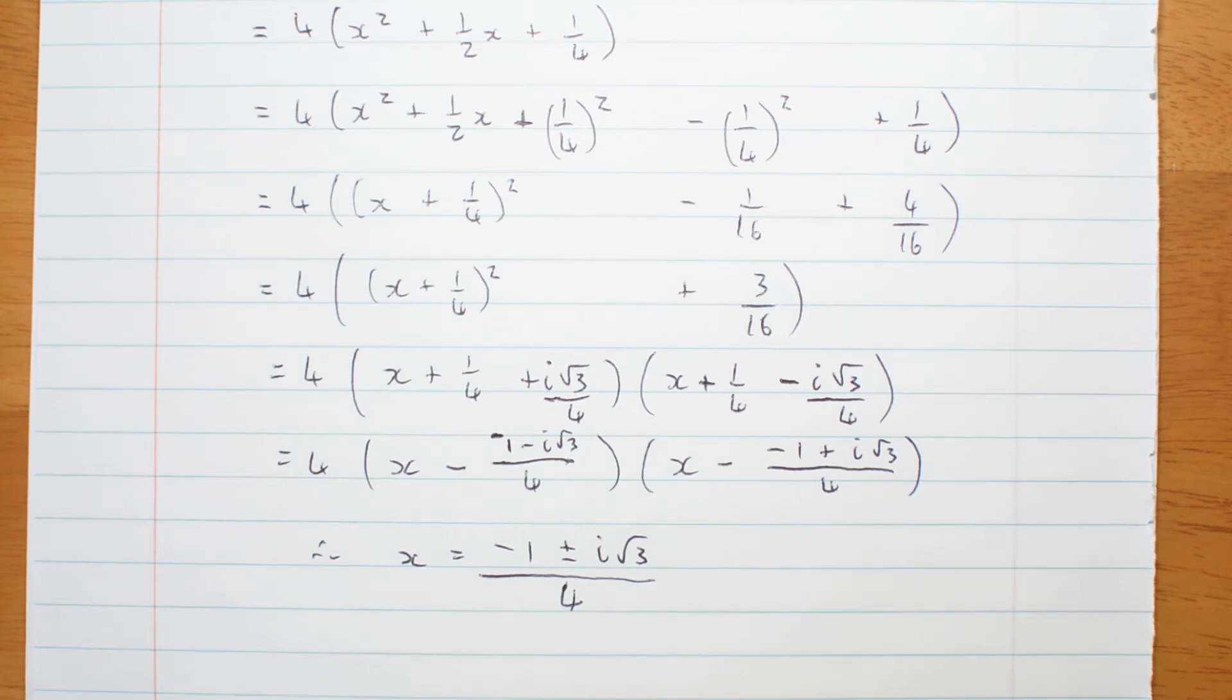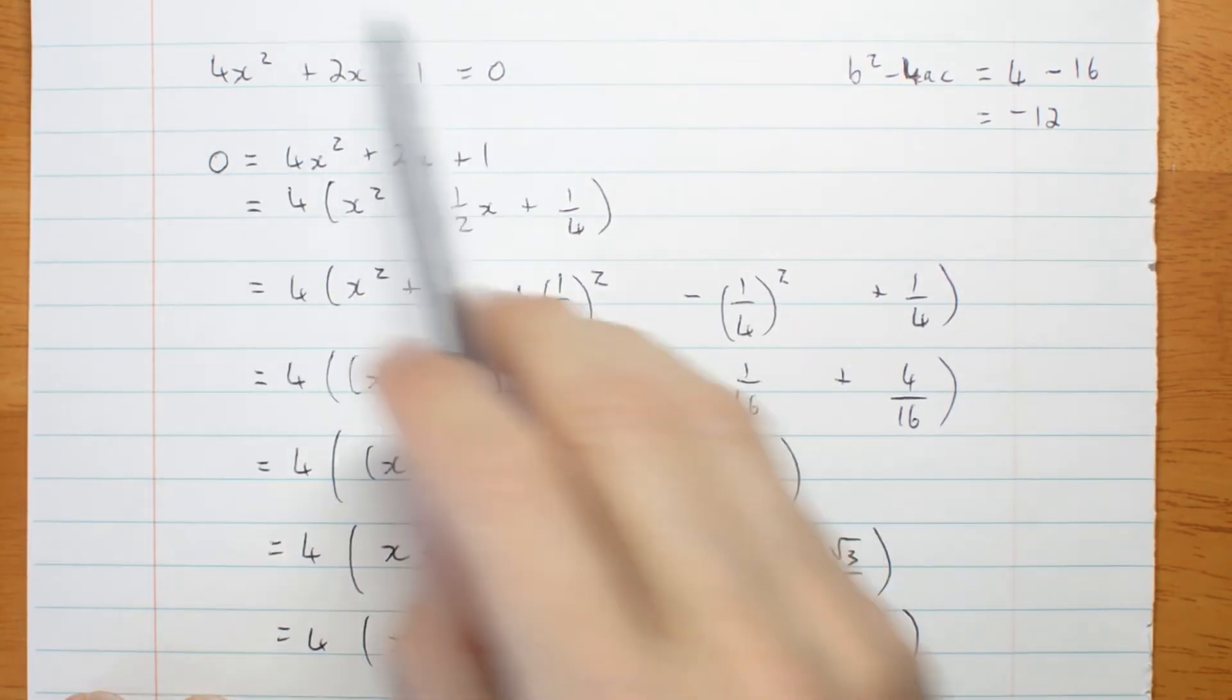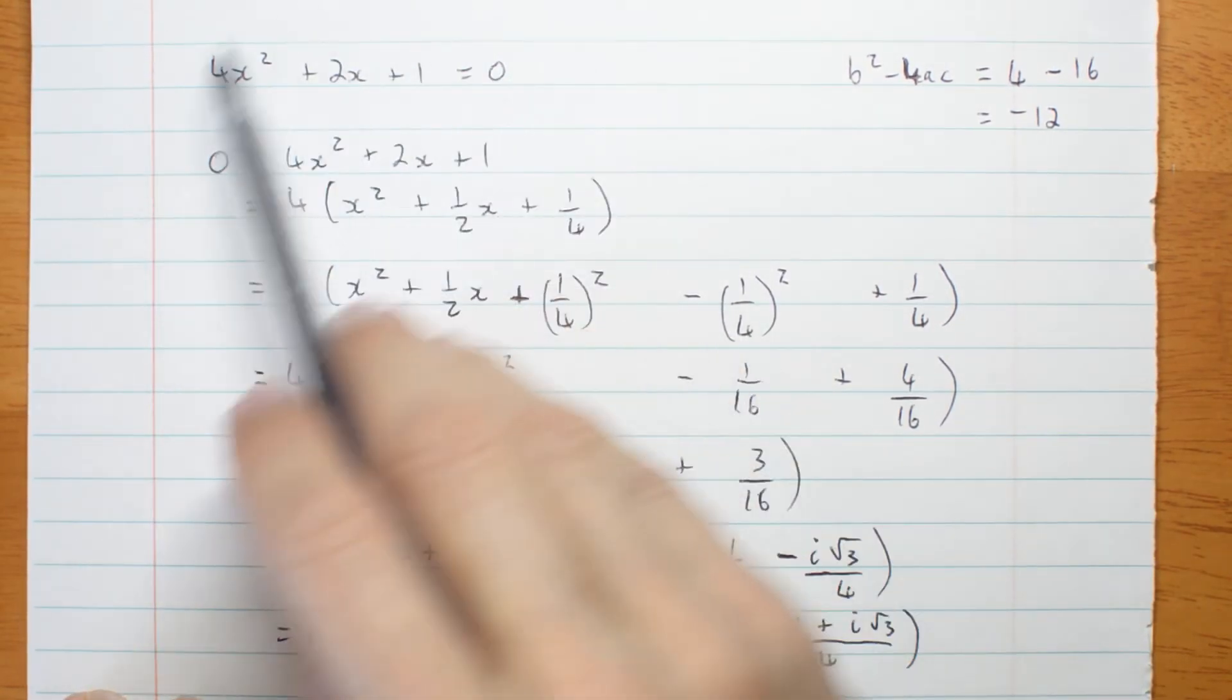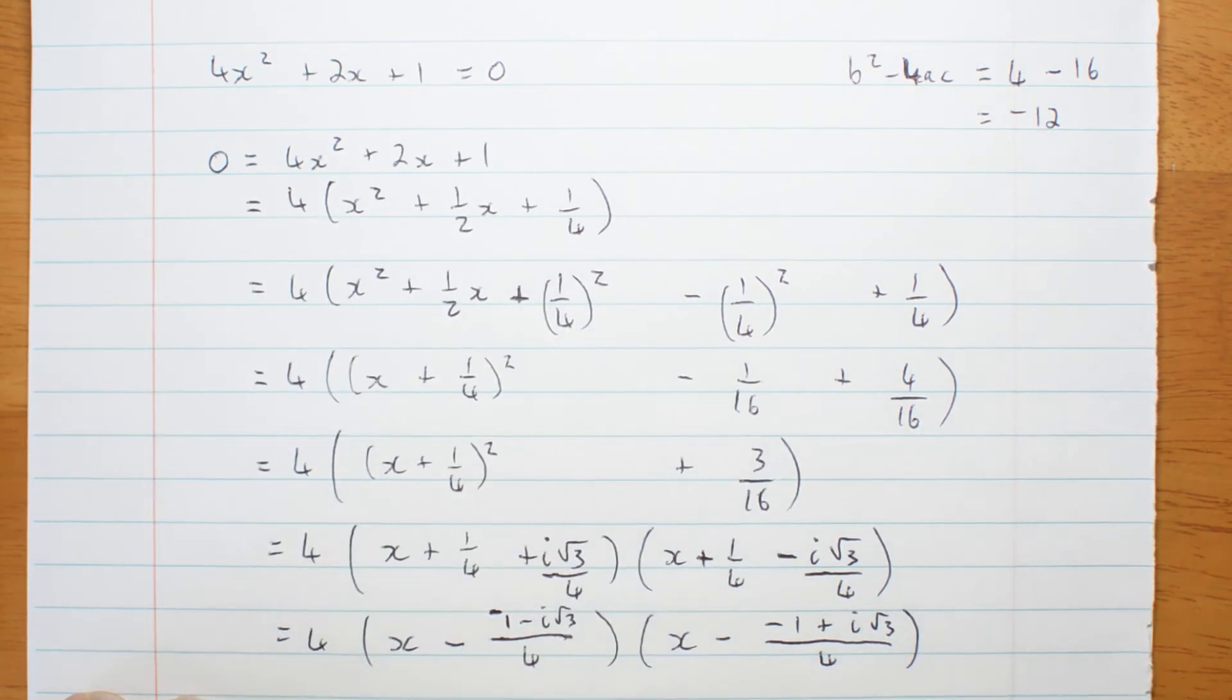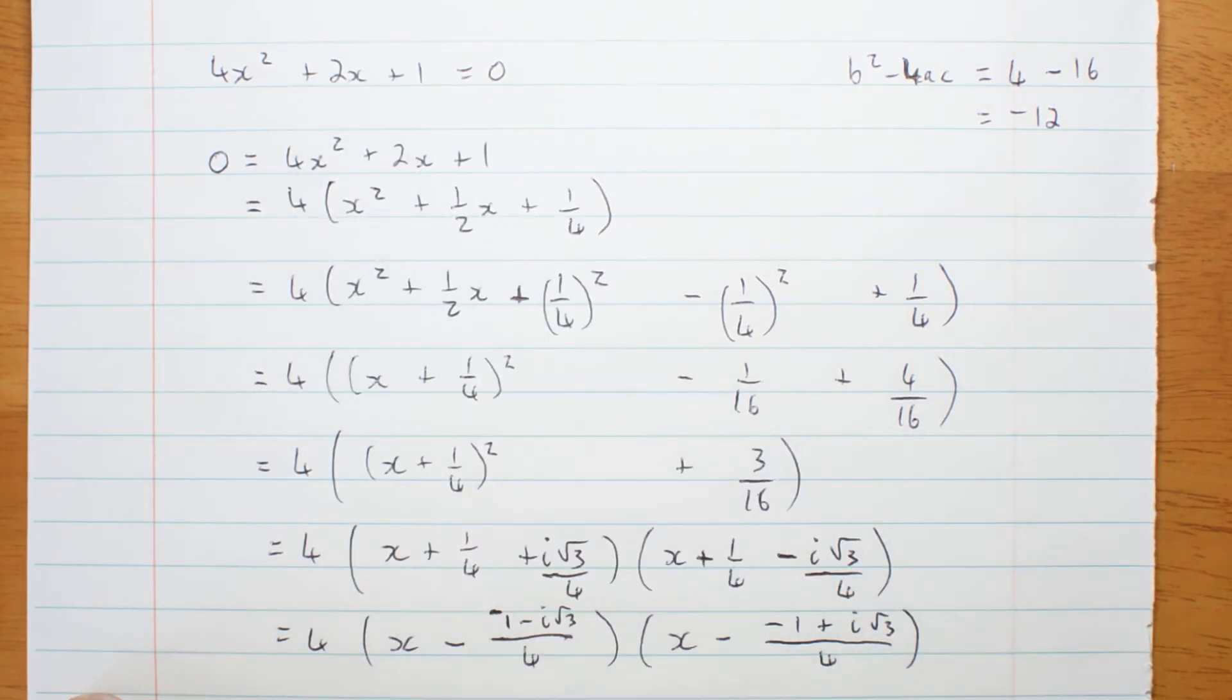Of course, there is another way to solve this quadratic equation. And that is to use the quadratic formula. You will find yourself doing all the same steps as you go. Why is that? Well, it's because the quadratic formula, you can derive the quadratic formula by writing ax squared plus bx plus c and completing the square.